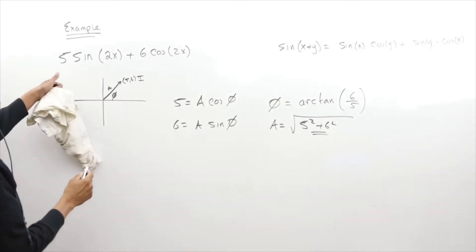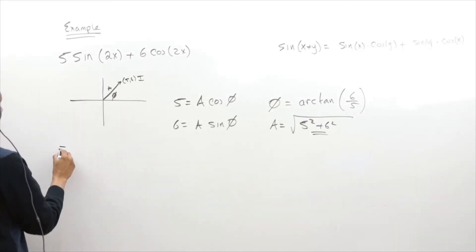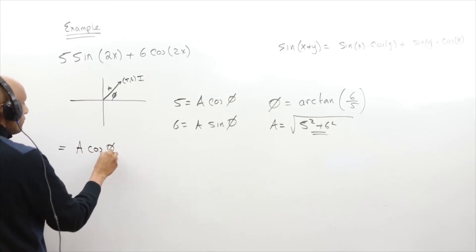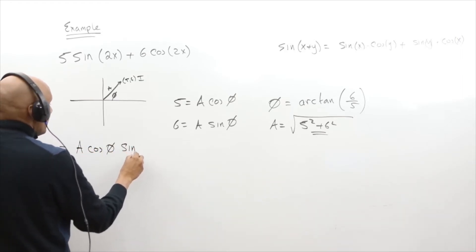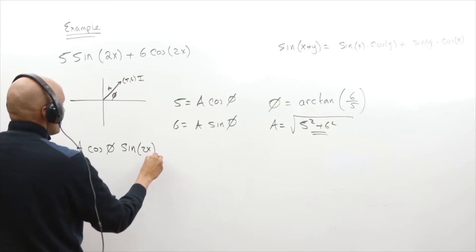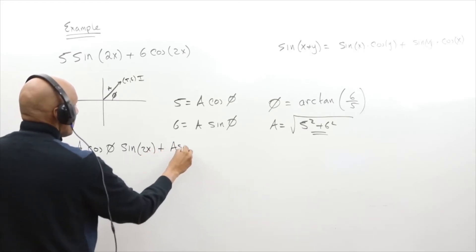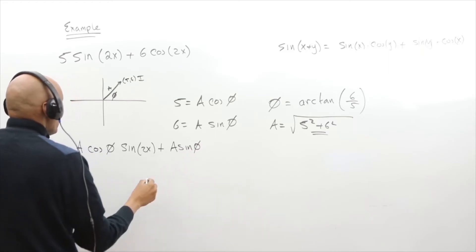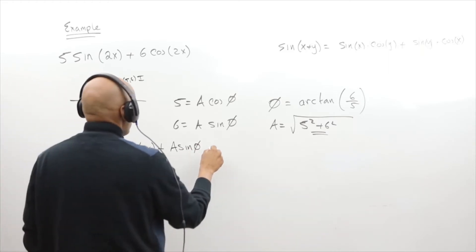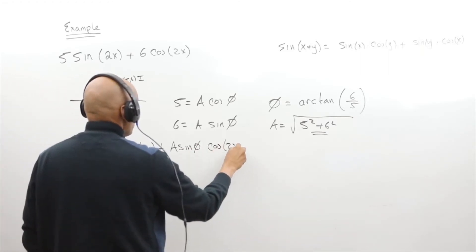So if I have this right, this first equation can be rewritten in terms of A cosine of phi times sine of 2x plus A sine of phi times cosine of 2x.